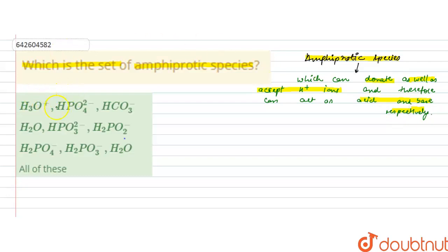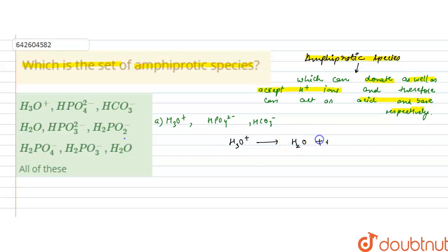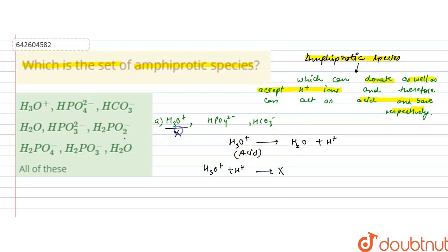Now we have to check which set contains all amphiprotic species. In the first option we have H₃O⁺, HPO₄²⁻, and HCO₃⁻. H₃O⁺ can donate H⁺ ions to form water, so it can act as an acid. However, H₃O⁺ cannot accept H⁺ ions, meaning it cannot act as a base. So it is not amphiprotic, and this entire set is eliminated.